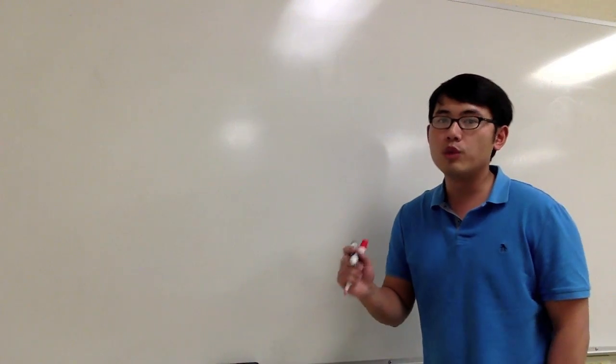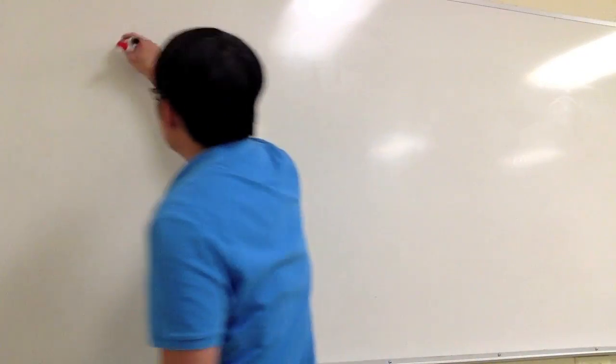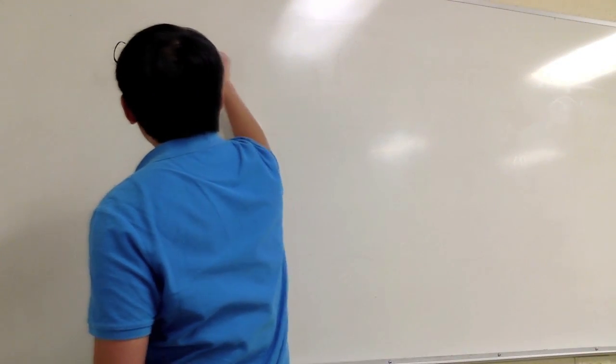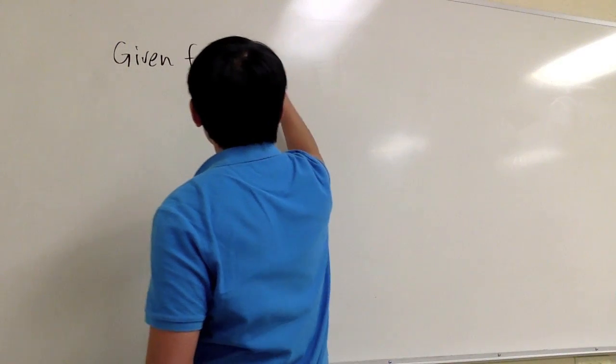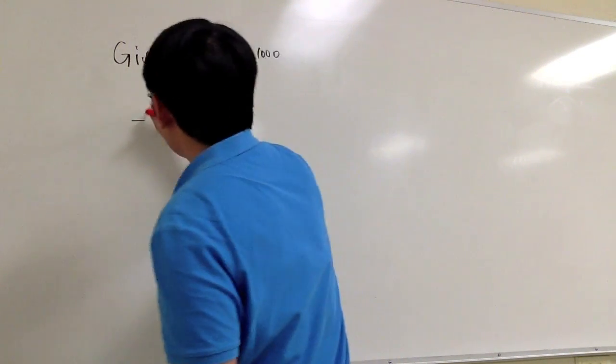So remember that when we first learn about derivatives, we have to define derivative in terms of limit. Given f of x equals x to the 1000 power, and if I want to find the derivative of this at x equals 1, let me write this as f prime of 1.